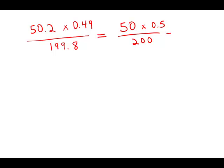So 50 times 0.5 is half of 50, 25. 25 over 200, well, there are eight 25s in 200. So this is the fraction one-eighth, and this is answer choice B.